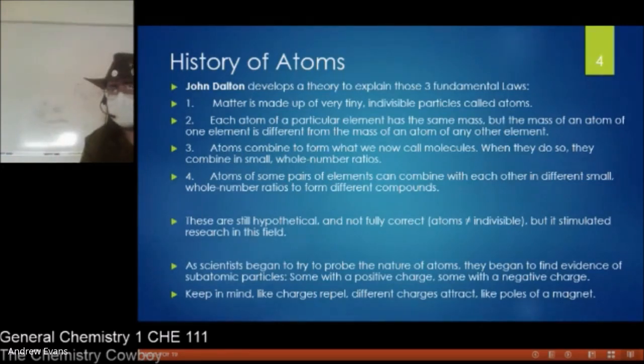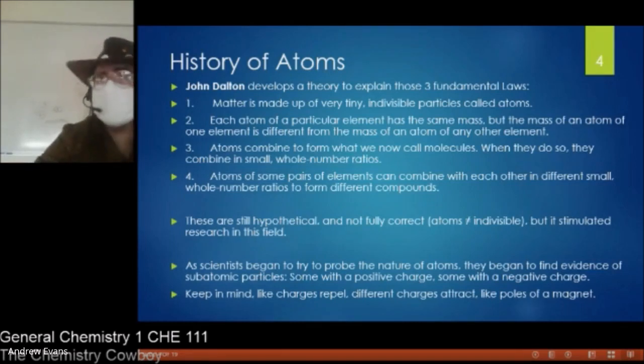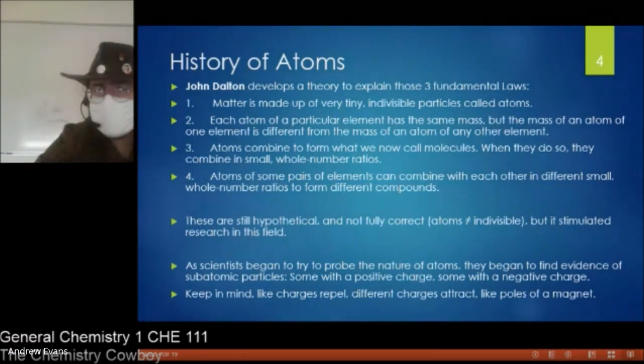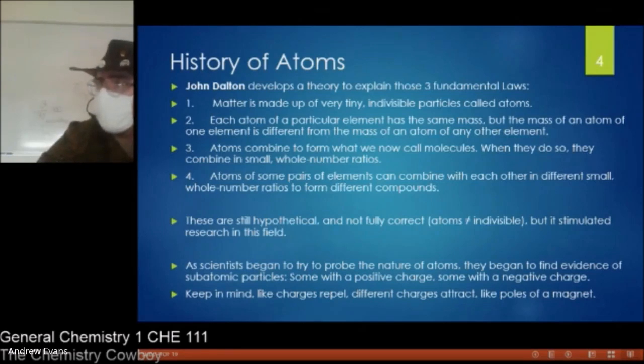Matter is made up of very tiny, indivisible particles called atoms. Now, actually, a Greek philosopher first proposed atoms a while ago, but didn't really have any science to back them up. So he brought this idea of atoms back to the forefront. That atoms of a particular element will each have the same mass, but the mass of an atom of a different element is going to have a different mass. So each hydrogen atom is going to be one gram per mole. Each oxygen atom is going to be 16 grams per mole. I can pretty reliably trust each oxygen atom is going to weigh the same, but oxygen and hydrogen weigh completely different masses.